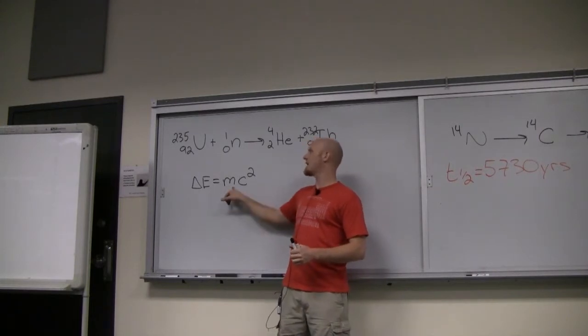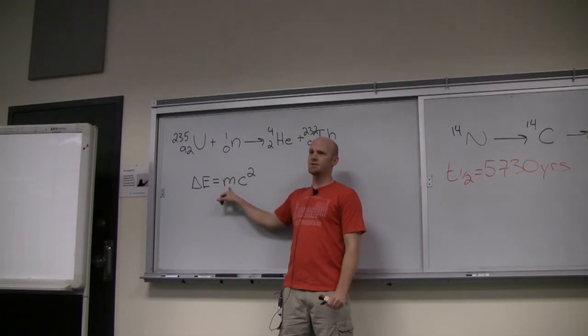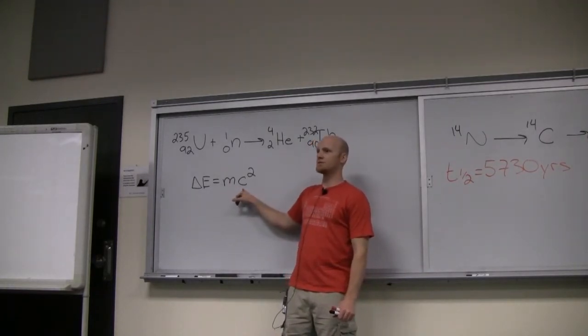That E equals mc squared, right? And what this means, energy equals mass times the speed of light squared. It turns out if mass is converted into energy, the amount of energy it's converted into is take that mass in kilograms times the speed of light squared.